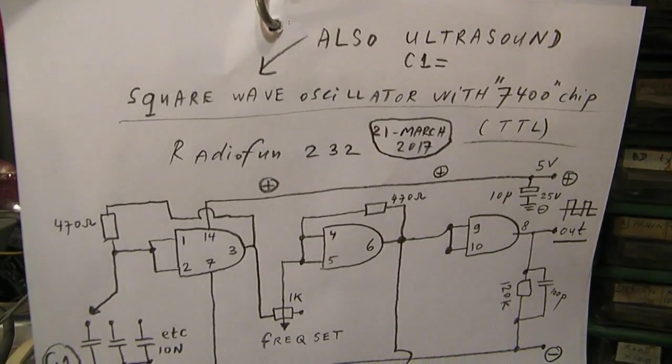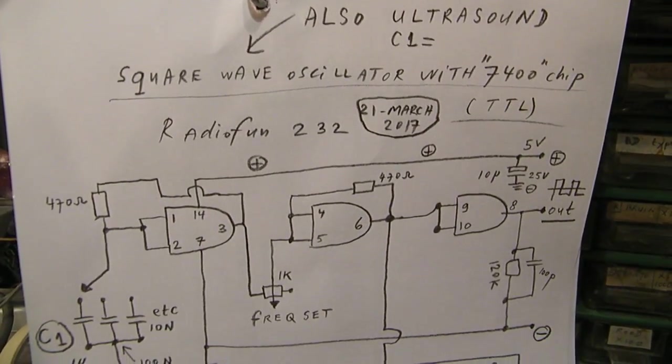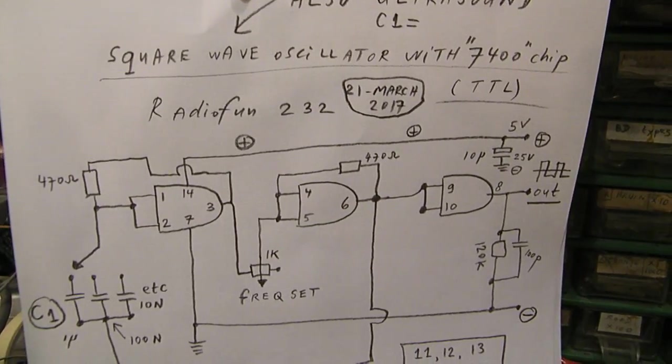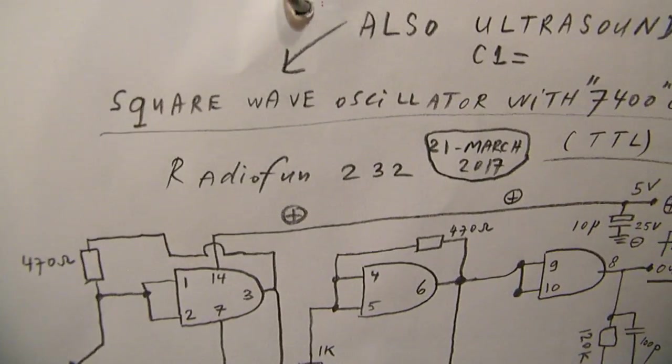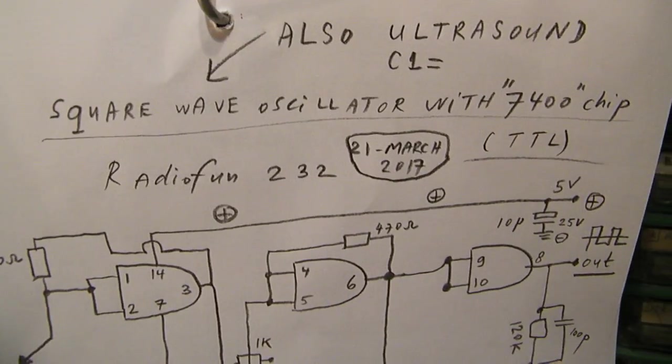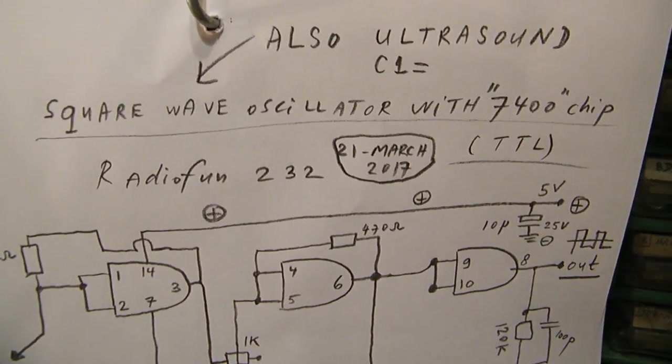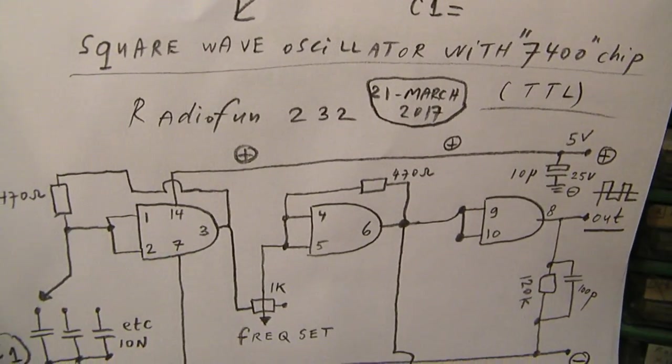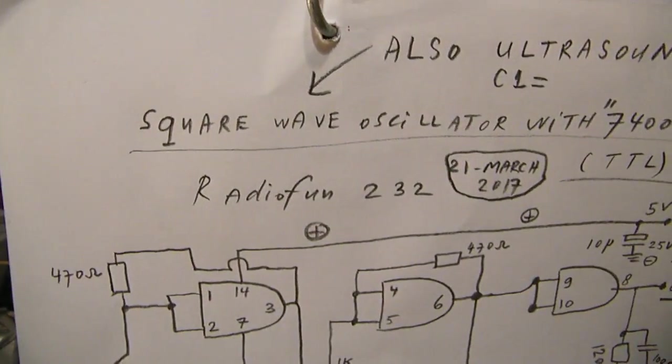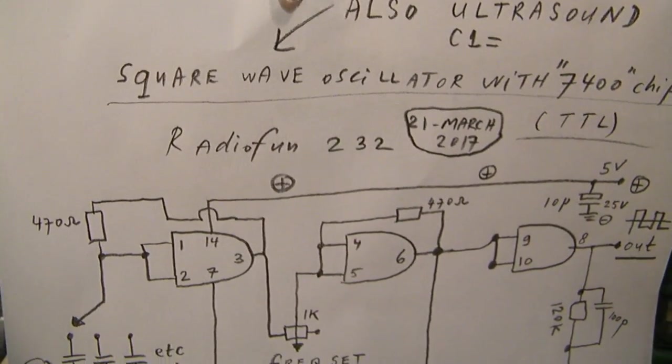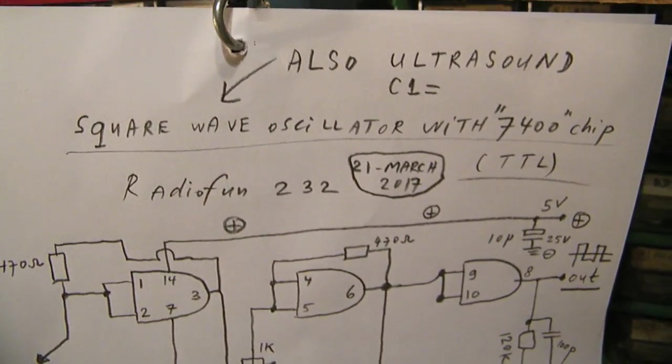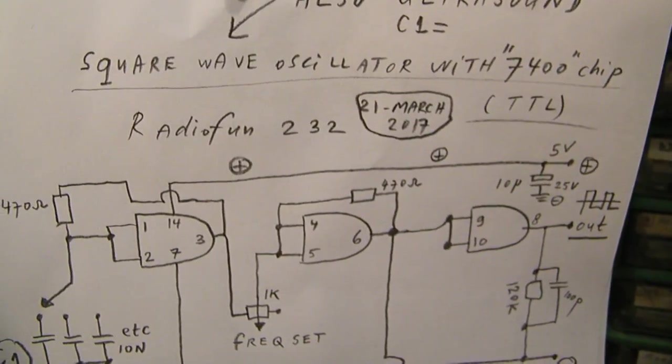I did an experiment yesterday that led to this development: a square wave oscillator with a 7400 chip. The circuit from these books didn't work, but I went down to lower frequencies and changed the circuit somewhat. Here is the schematic.